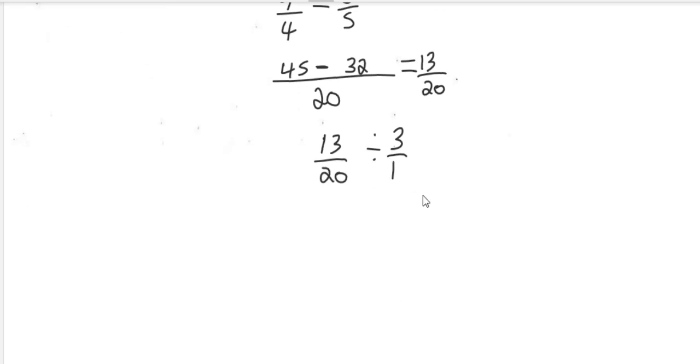And then we're going to flip the denominator to the top and the numerator where the denominator was. So we're going to have 13 over 20 multiply by 1 over 3.